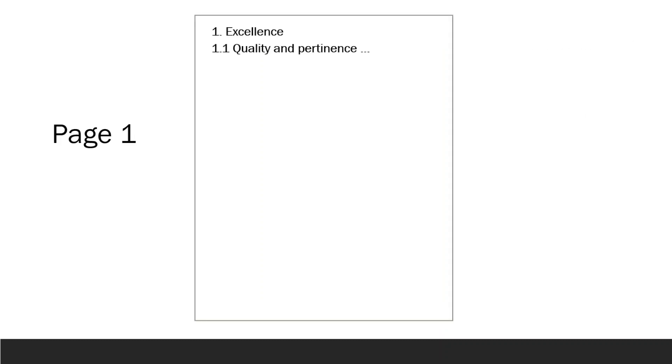On the first page, where you start with Part 1, Excellence, dedicate the entire page to Section 1.1, quality and pertinence of the project's research and innovation objectives, and the extent to which they are ambitious and go beyond the state of the art. Begin with a brief introduction to your topic and why it is important.